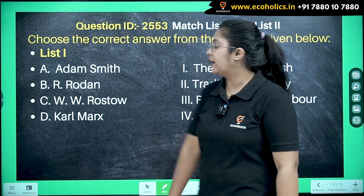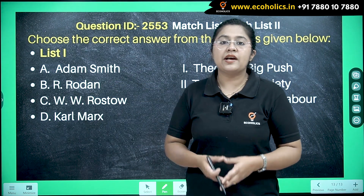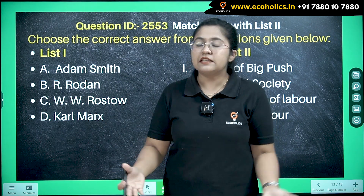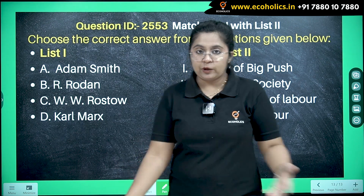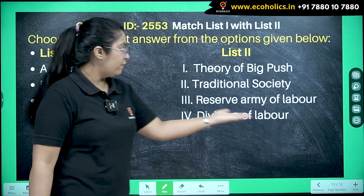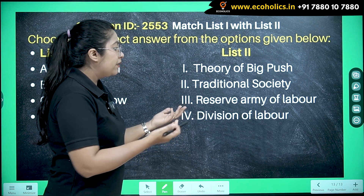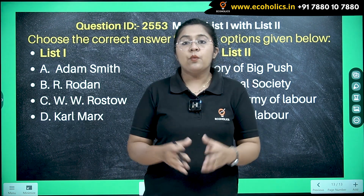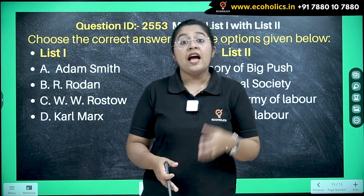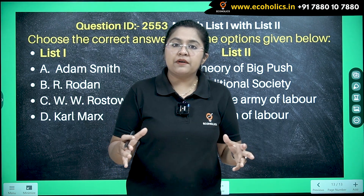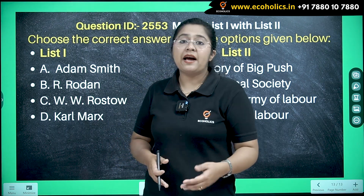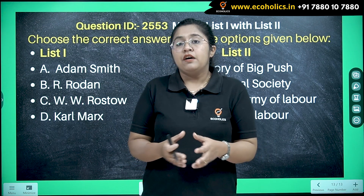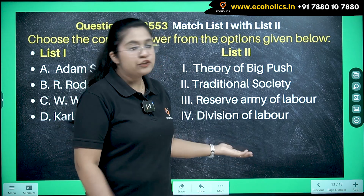The very first economist is Adam Smith, known as the father of economics. From the very beginning of the 17th century, the name of Adam Smith is well known. Looking at the options in List 2 — theory of big push, traditional society, reserve army of labor, division of labor — Adam Smith's classical theory prominently includes the concept of laissez-faire, capital accumulation, and division of labor. Division of labor is also an important management concept discussed across various streams, so we match Adam Smith with division of labor.